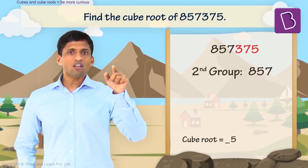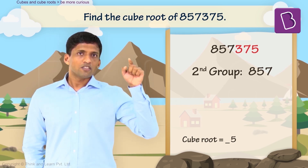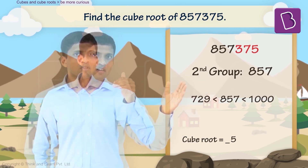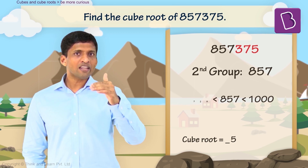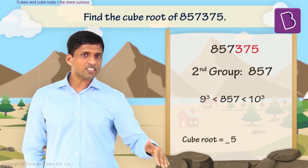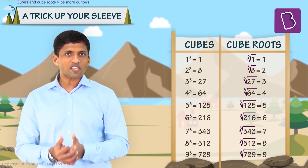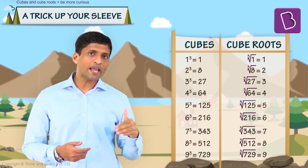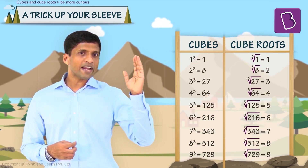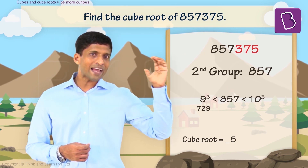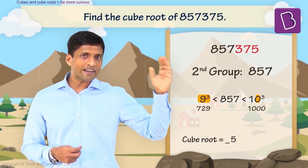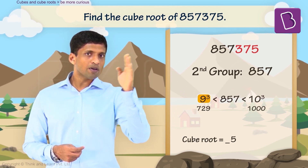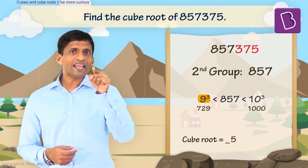Now take the second group, which is 857. The approach is to find the perfect cubes just before and after 857. You will find that it is between 9³ (729) and 10³ (1000). The prerequisite for this method is knowing the cubes from 1³ up to 9³. Since 857 is between 729 and 1000, and it is above 9³, the smaller number is 9.